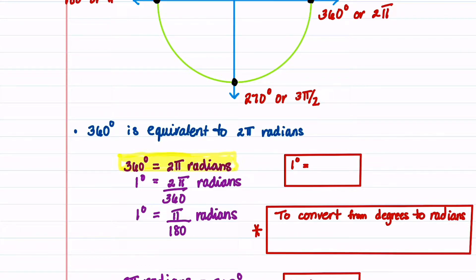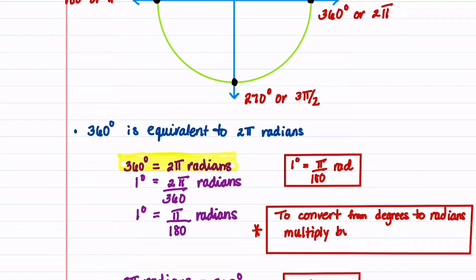Students often wonder where that formula comes from — well, that's where it comes from. So 1 degree is pi over 180 radians, and to convert from degrees to radians, we have to multiply by pi over 180.